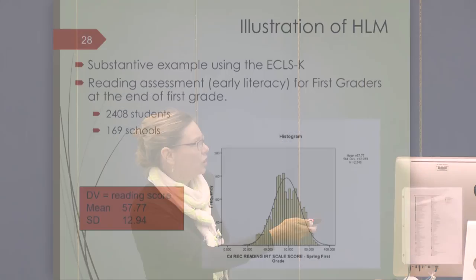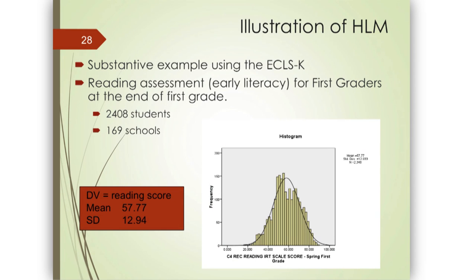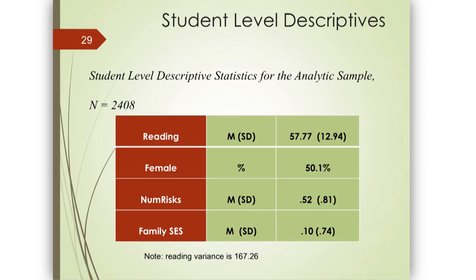For the walk-through illustration of HLM I used data from the Early Childhood Longitudinal Study — 2,408 students in 169 schools — looking at reading assessment. Three child-level variables: gender, number of family risks (where higher values indicate poorer outcomes, such as having non-English-speaking parents or receiving free or reduced lunch), and family socioeconomic status. Three school-level variables: neighborhood problems — crime, trash, and disarray — school SES, and public versus private school.